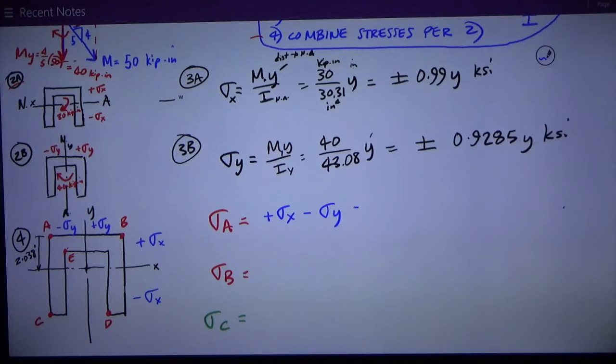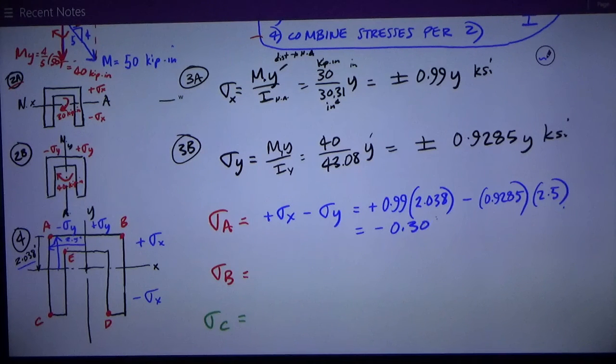What I need to know is the distance to the neutral axis from point A to each neutral axis. So for sigma x, it's positive, and the multiplier is 0.99. The distance to the neutral axis for x-axis bending, or Mx, is that distance, which happens to be the centroidal distance of 2.038 from the top. For the sigma y, what I'm concerned with is the distance to the neutral axis from point A, which is half the cross section, or 2.5 inches, because the thing's 5 inches wide. It's negative 0.9285 times 2.5. This works out to be negative, compression, 0.304 ksi.